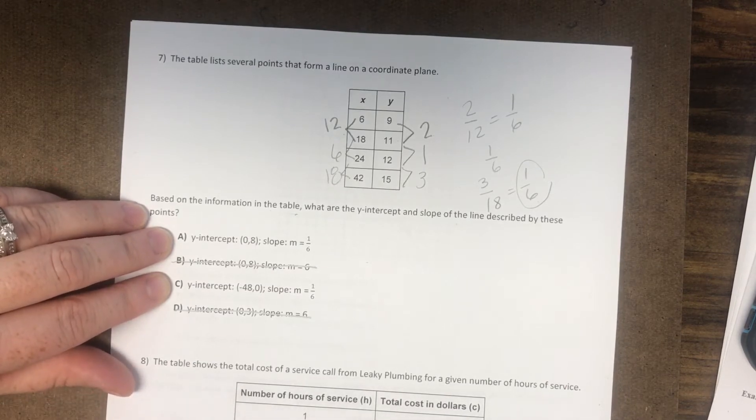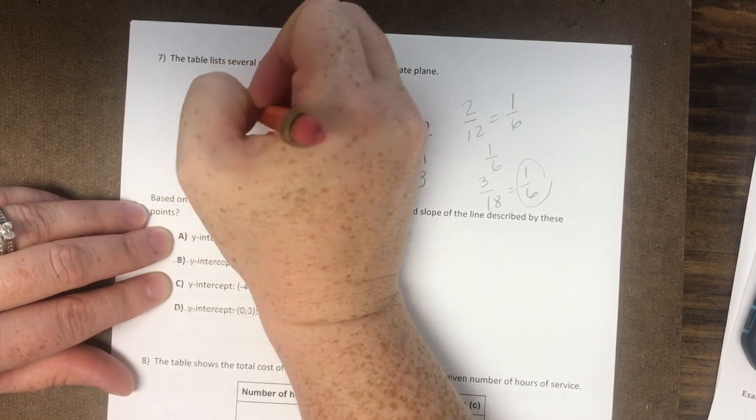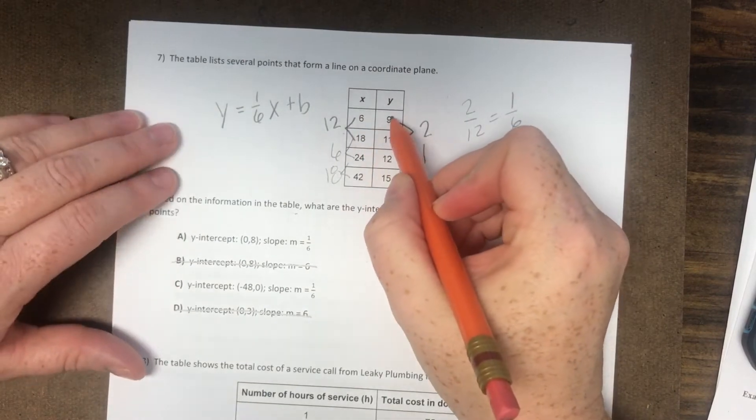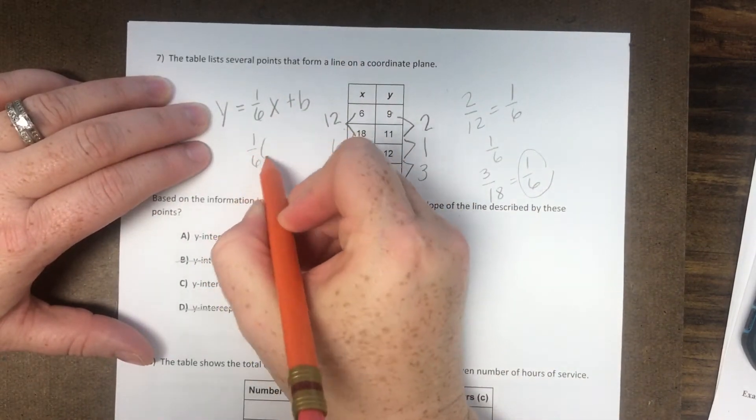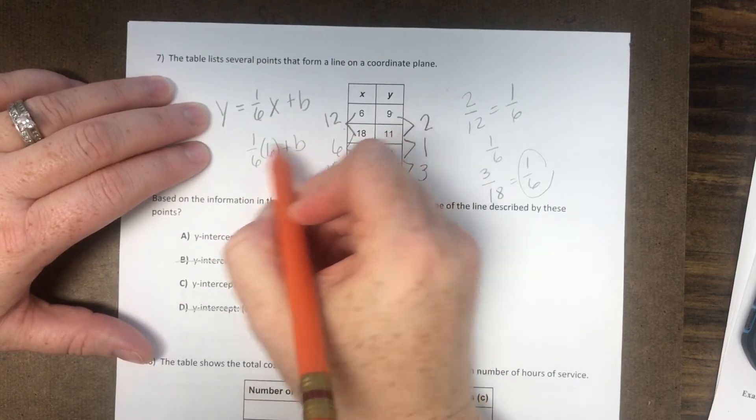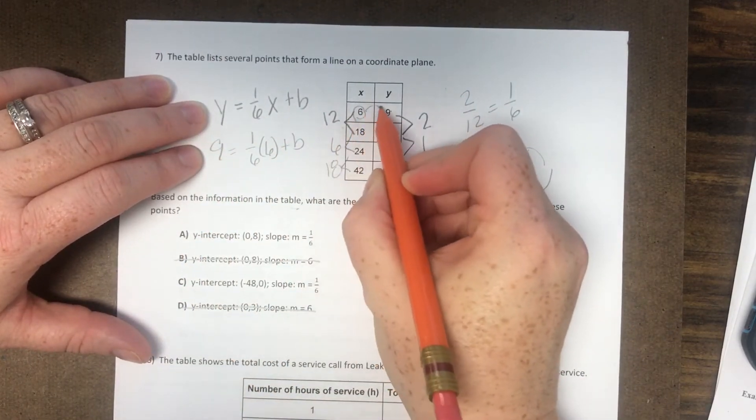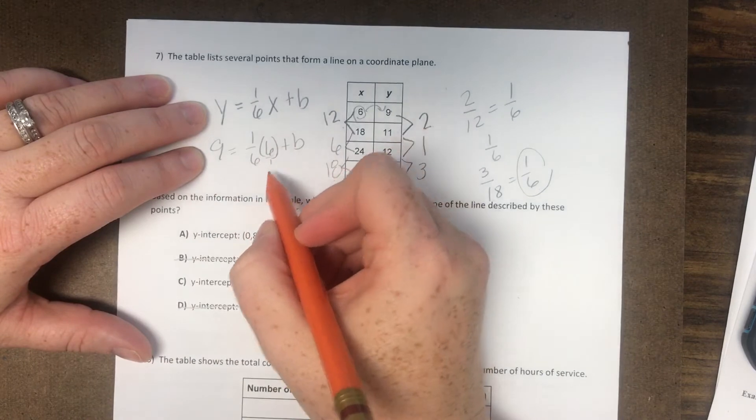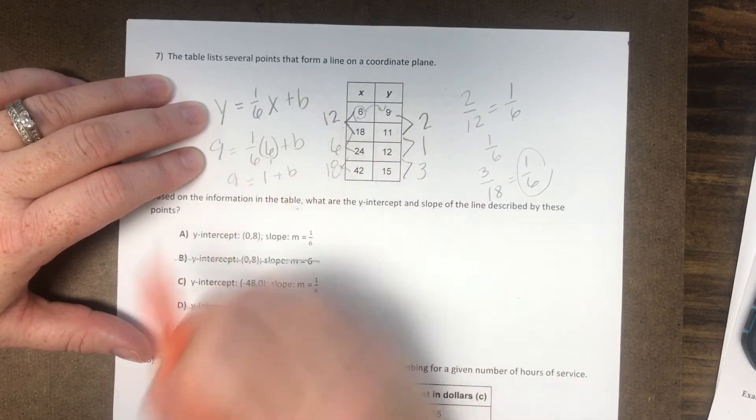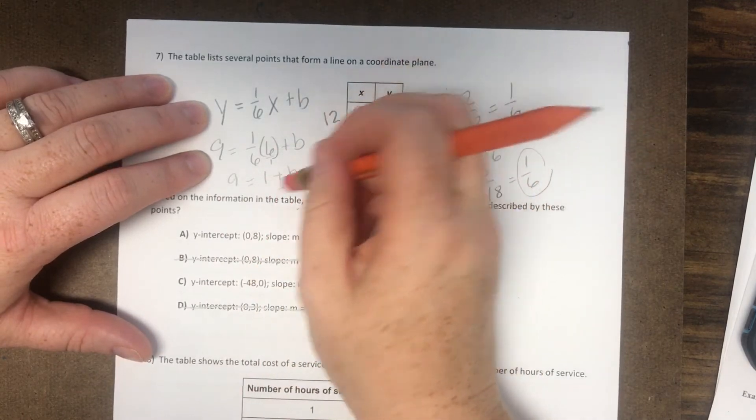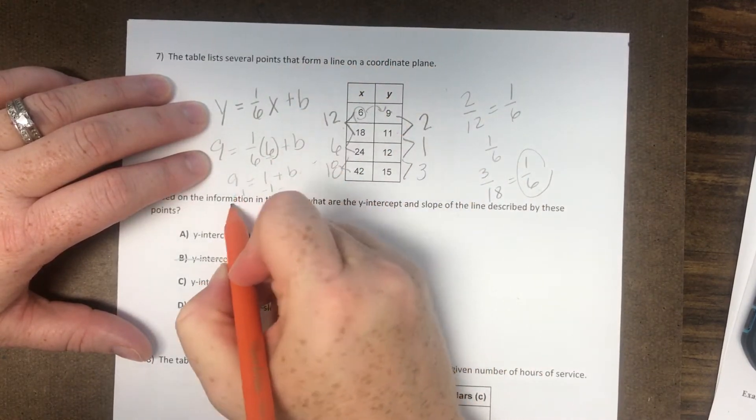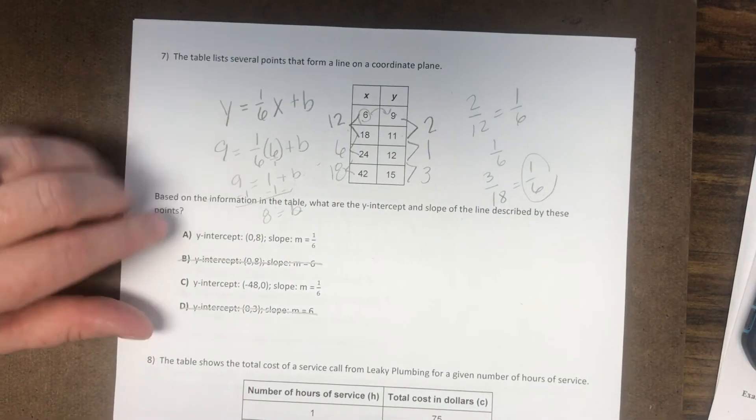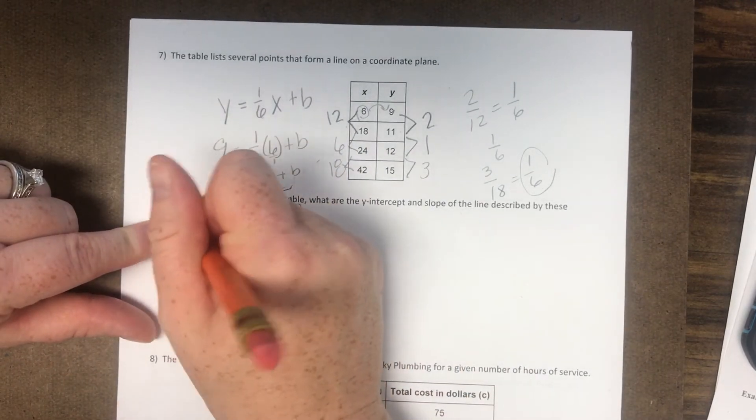And then C and A also have that, so we're going to have to find what our y-intercept is. So I told them to start the equation. You can do it like this: 1/6 X, and then you're going to put B. So we're going to insert one of these points in here and solve. So 1/6 times 6 plus B equals 9. Because if you plug in 6, you get 9. So 1/6 of 6 is 1. 1 plus B is 9. Or I'm sorry, not minus B, minus 1 because we're solving for B. So B equals 8. So our y-intercept is going to be 8. So the only one that does that is letter choice A.